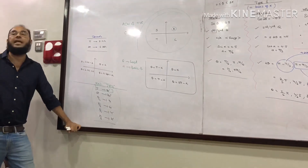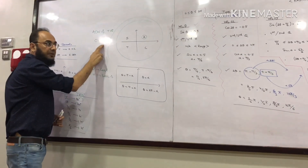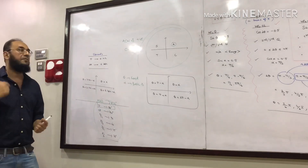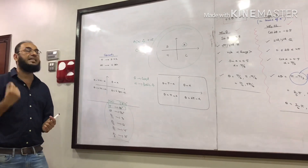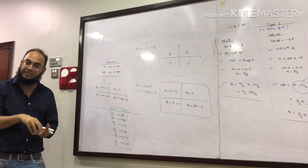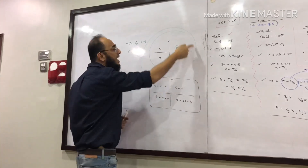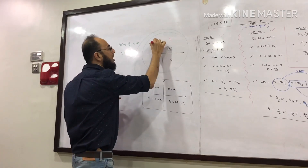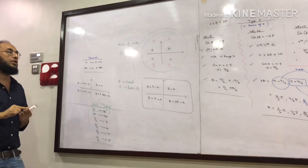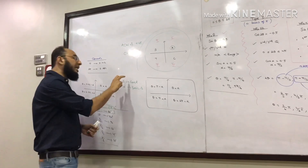When solving a trigonometric equation, you need to take care of two things. First, anti-clockwise angles are positive and clockwise angles are negative. The reason is that everything in nature goes anti-clockwise — the motion of electrons around orbit, planets around the sun. That is why ASTC is labeled anti-clockwise: first quadrant all trig ratios positive, second quadrant only sine positive, third quadrant only tangent positive, fourth quadrant only cosine positive.